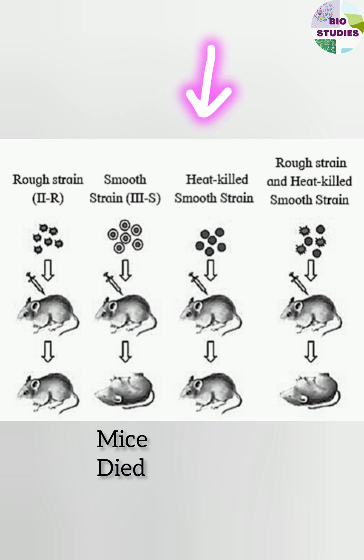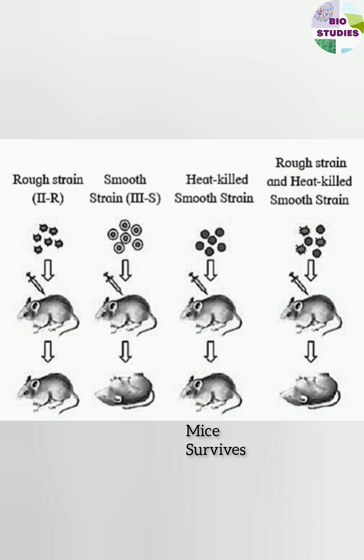Then the heat-killed smooth strain is injected and the mice survive. Then the heat-killed smooth strain plus the rough strain is injected into the mice and the mice died.